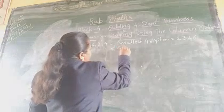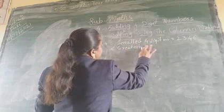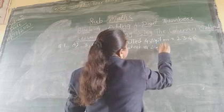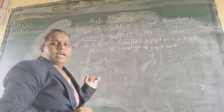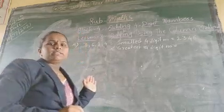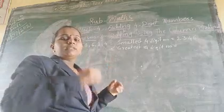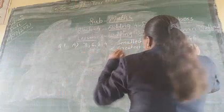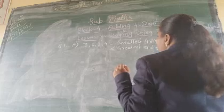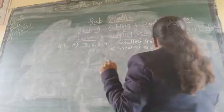Now, how do we prepare the greatest four digit number? At the time of preparing the greatest four digit number, we start from the greatest digit — we use descending order. Descending order means greatest to smallest, and ascending order means smallest to greatest. So starting from 6, then 4, then 3, then 2. The greatest four digit number is 6432.